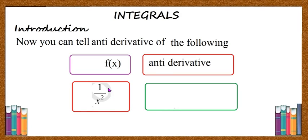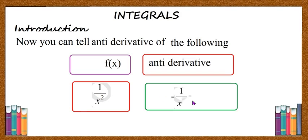Let us take 1 by x square. 1 by x square is the derivative of what? You know that derivative of 1 by x is minus 1 by x square, therefore 1 by x square is the derivative of minus 1 by x. Therefore, anti-derivative of 1 by x square is minus 1 by x. Like this, you can write the anti-derivative of a function.